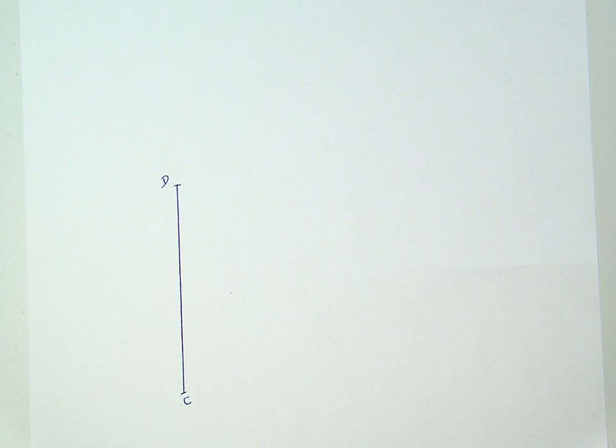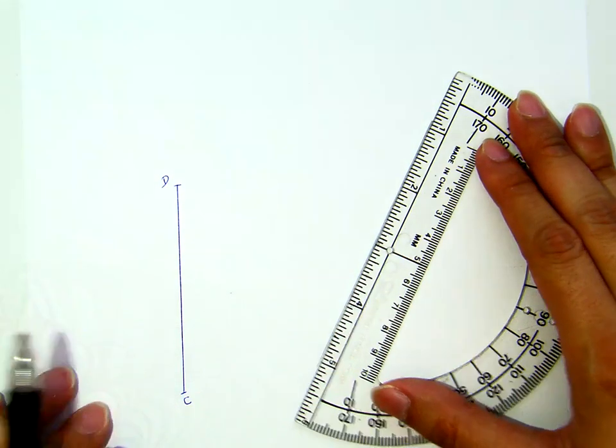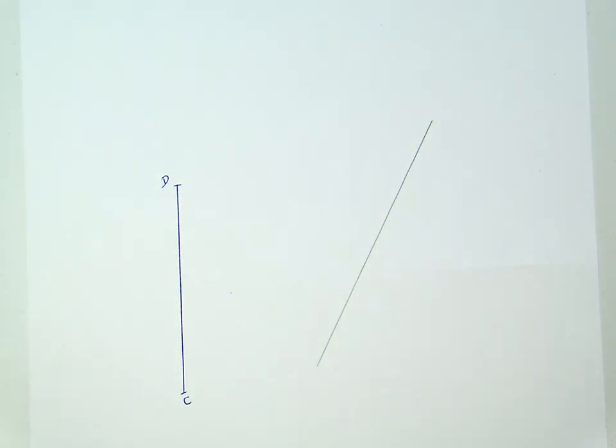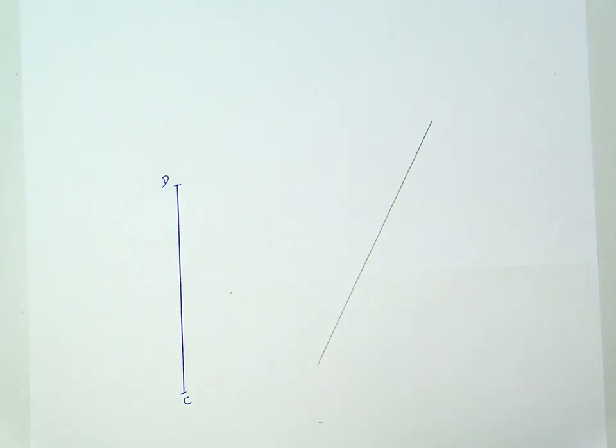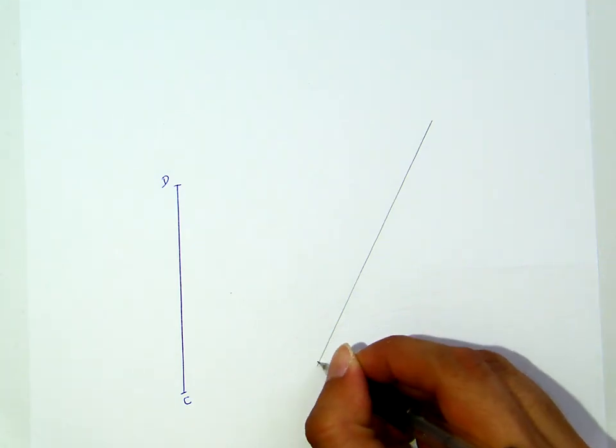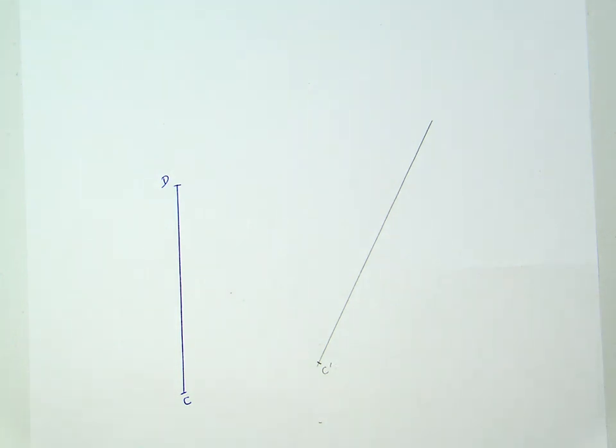Now, I now want to construct a segment congruent to segment CD. Now, how to do that? First thing I will do, I will draw a line long enough, longer than CD, of course. And then, I pick a point on this line toward the end, of course. Let's call this C'. This is the point correspond to my C.